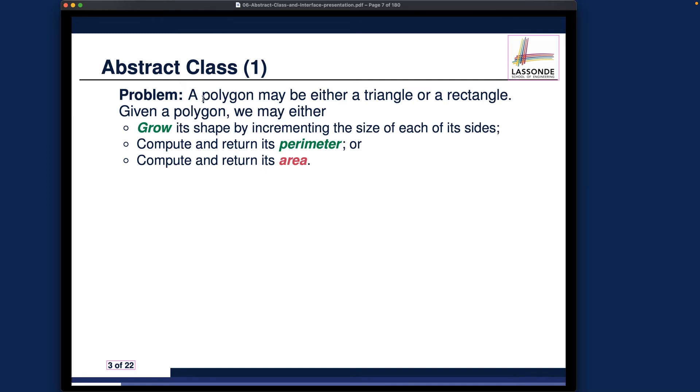Let's see what the problem is. We're trying to solve the problem for a polygon, a shape with many sides. A polygon may either be a triangle or rectangle. Let's say we make the assumption that we only consider these two polygons. Given the polygon, we may either—these are the three functionalities we would like to support. Now you want to think about in your head: how do I support this polygon problem including triangle and rectangle using the inheritance concept I learned previously?